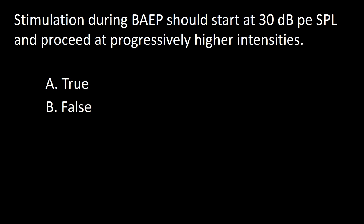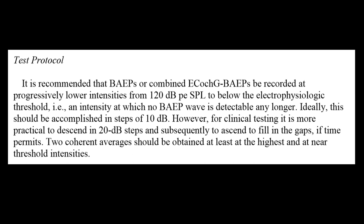Next question: Stimulation during brainstem auditory evoked potential should start at 30 dB SPL and proceed at progressively higher intensities — A: true, B: false. This paragraph from the ACNS guidelines of the American Academy of Clinical Neurophysiology recommends for adults to start with 120 dB PE SPL and progressively go down. The answer is false. Thank you very much for your attention.